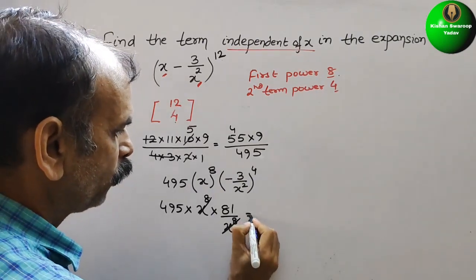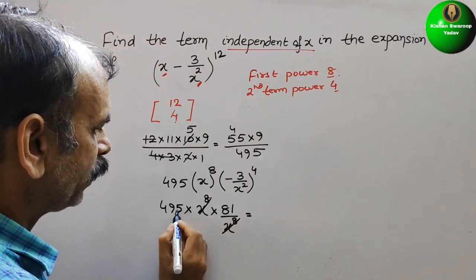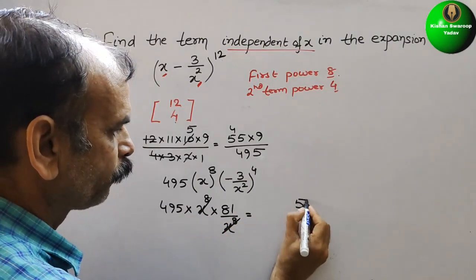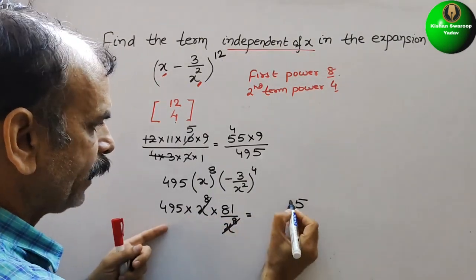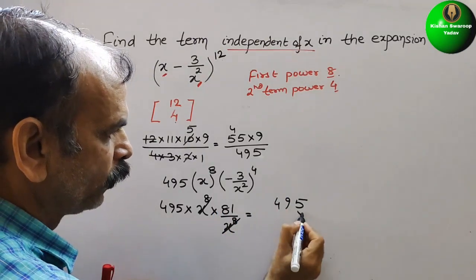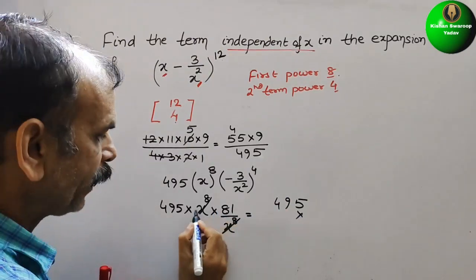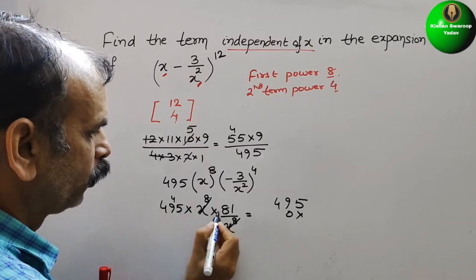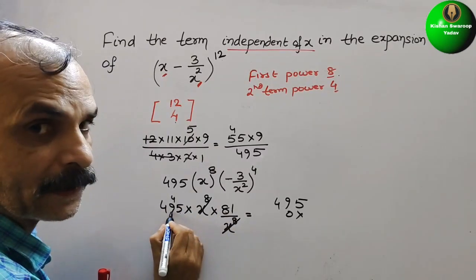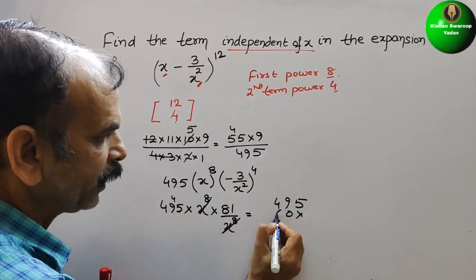So therefore just multiply them. What we will get? 1 into 5 is 5 and 9 and 4. Next with 8. 8 into 5 is 40, 4.